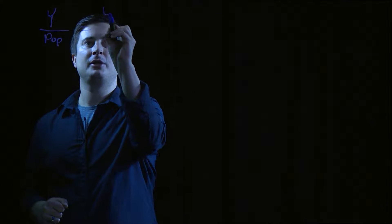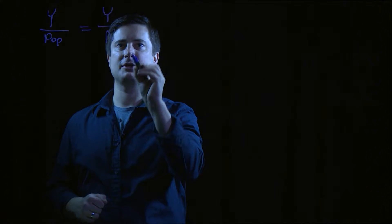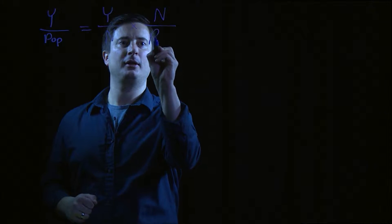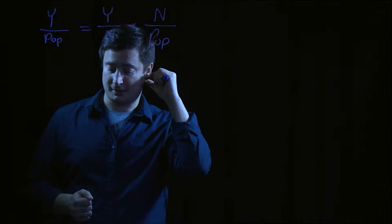I'm going to write pop for population. Well, that simply equals GDP per worker, and W will be for workers here, times the number of workers as a share of the population. We would call this the share employed or something like that.